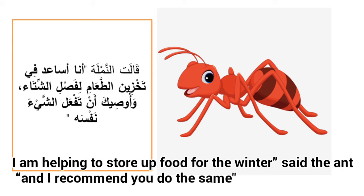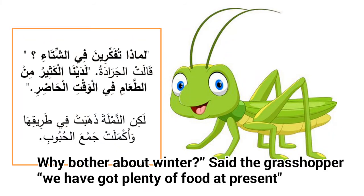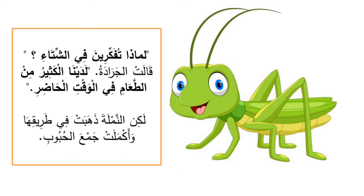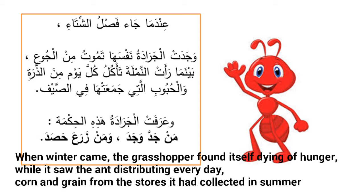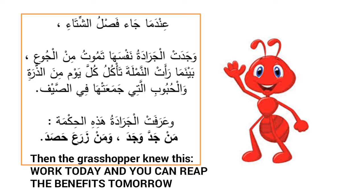قالت النملة: أنا أساعد في تخزين الطعام لفصل الشتاء، وأوصيك أن تفعل الشيء نفسه. لماذا تفكرين في الشتاء؟ قالت الجرادة. لدينا الكثير من الطعام في الوقت الحاضر. لكن النملة ذهبت في طريقها وأكملت جمع الحبوب. عندما جاء فصل الشتاء، وجدت الجرادة نفسها تموت من الجوع، بينما رأت النملة تأكل كل يوم من الذرة والحبوب التي جمعتها في الصيف. وعرفت الجرادة هذه الحكمة: من جد وجد، ومن زرع حصد.